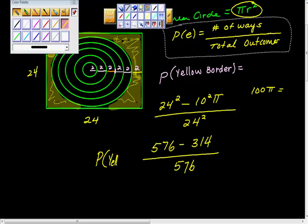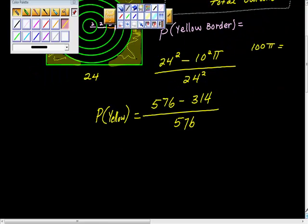So the probability of the yellow border is equal to this, and what is 576 minus 314?